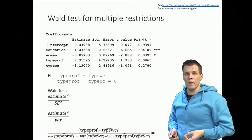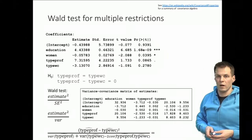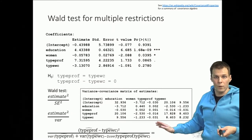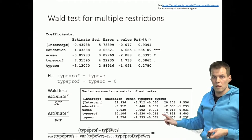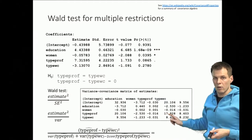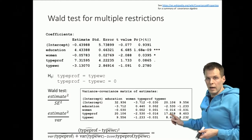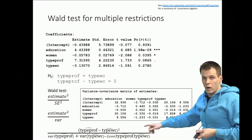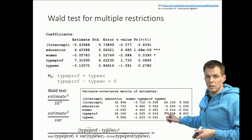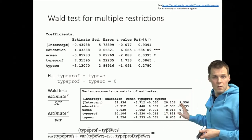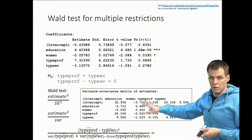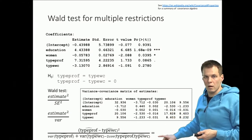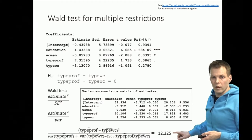The variance-covariance matrix of the estimates is something your regression software will provide for you. Here is the covariance matrix for the estimates in our example. The square root of this variance is the standard error for type professional, and the square root of this variance is the standard error for type white collar. And here is the covariance between these two estimates — something the regression software provides automatically. You don't have to understand how it's calculated. We then plug these numbers into our equation and get an answer of 12.325.